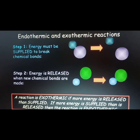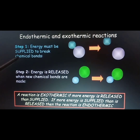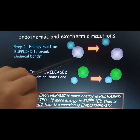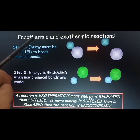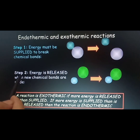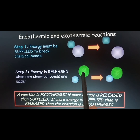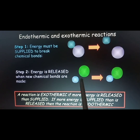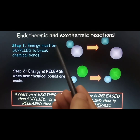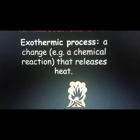Two important points about endothermic and exothermic reactions: First, energy must be supplied to break chemical bonds — to break the chemical bonds of atoms, energy is added. This type of reaction is known as endothermic reaction. Second, energy is released when chemical bonds are made — energy is produced, not added. In exothermic reaction, energy is released; in endothermic reaction, energy is supplied.